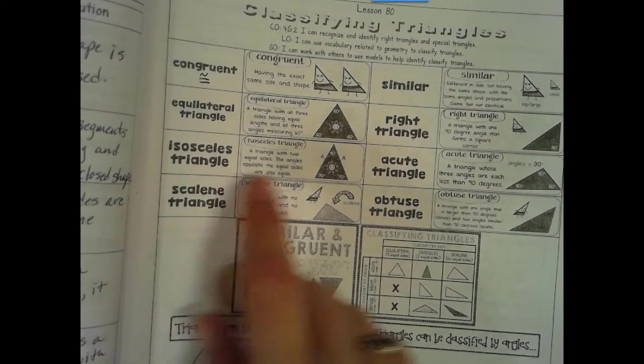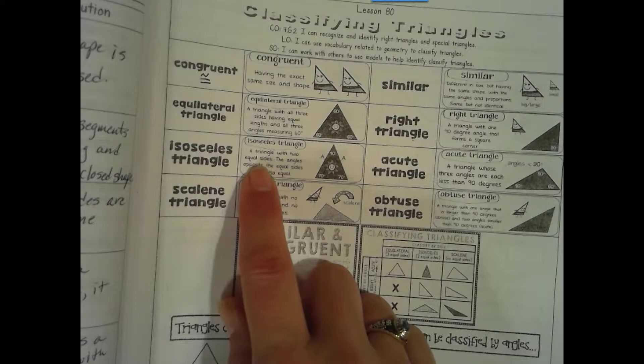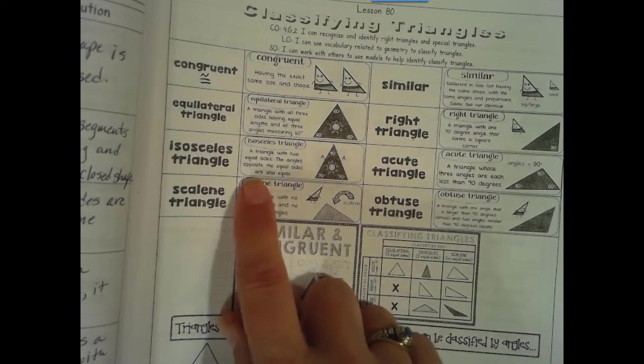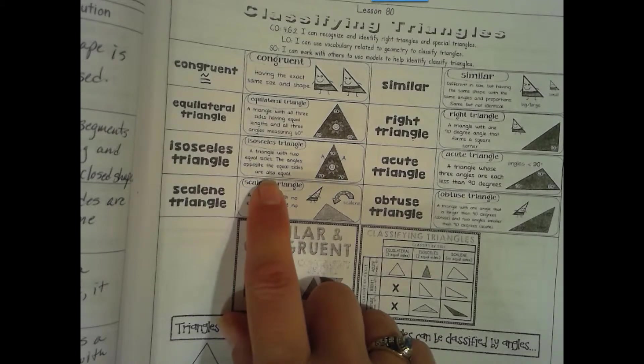Isosceles triangle: a triangle with two equal sides. That's the definition we're going to use. The angles opposite the equal sides are also equal.